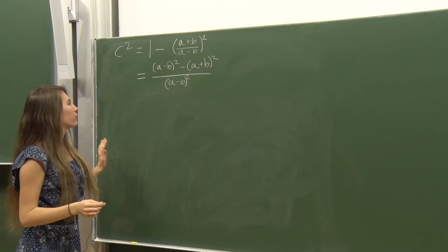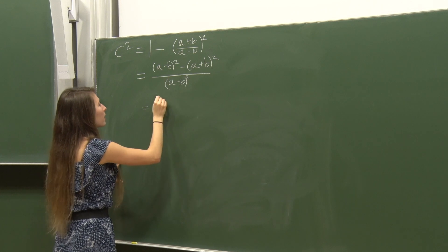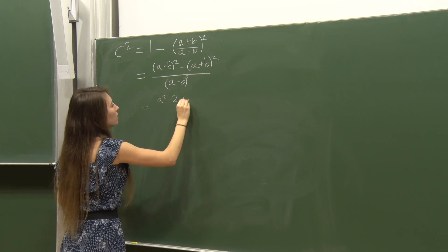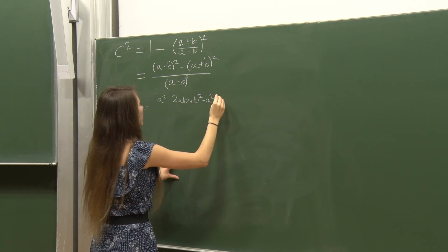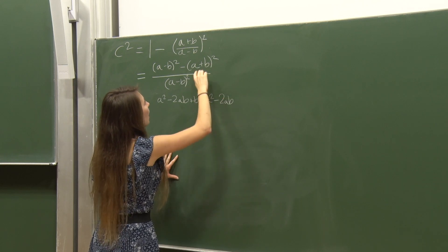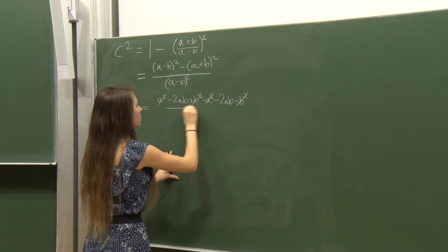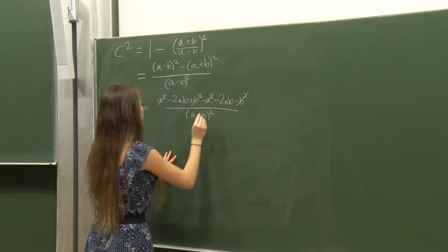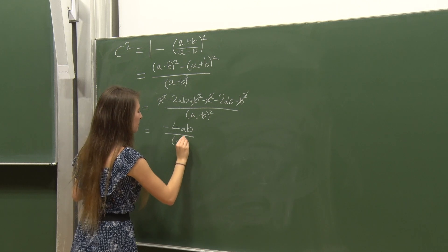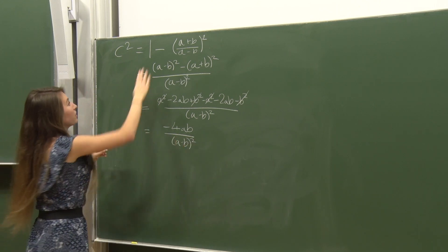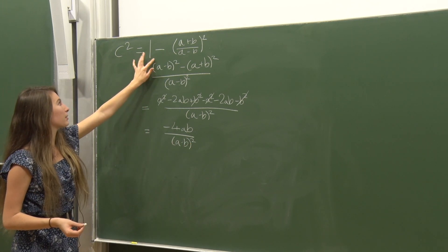The denominator (a-b)² matches what we had before. The numerator is (a² - 2ab + b²) - (a² + 2ab + b²). The a² and b² terms cancel, leaving -4ab. So these two expressions are always equal to each other, confirming the equivalence.